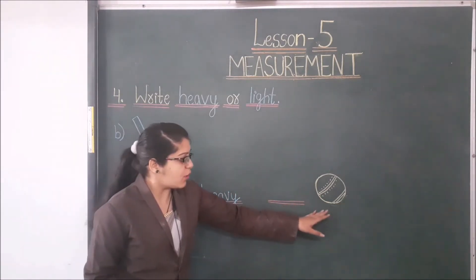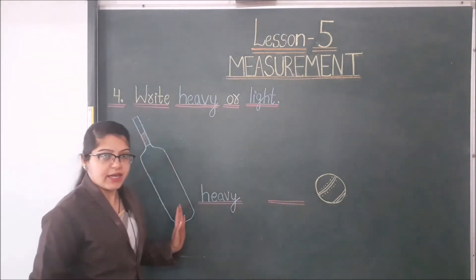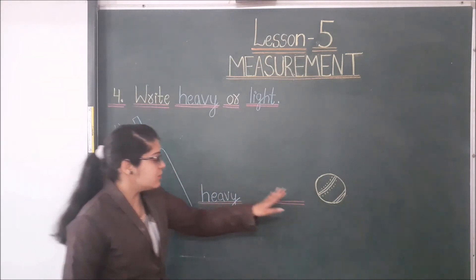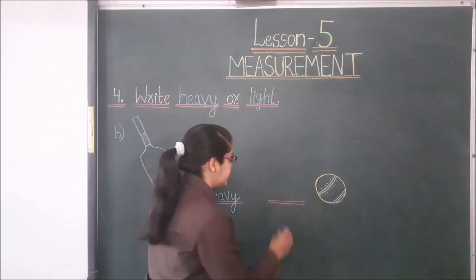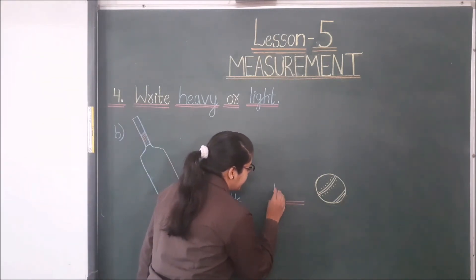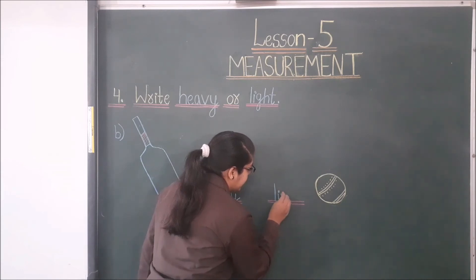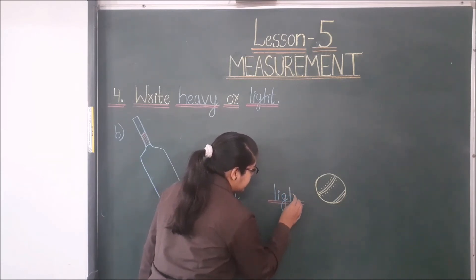Ball is lighter than a bat, so ball is light. Here we write 'light' — L-I-G-H-T.